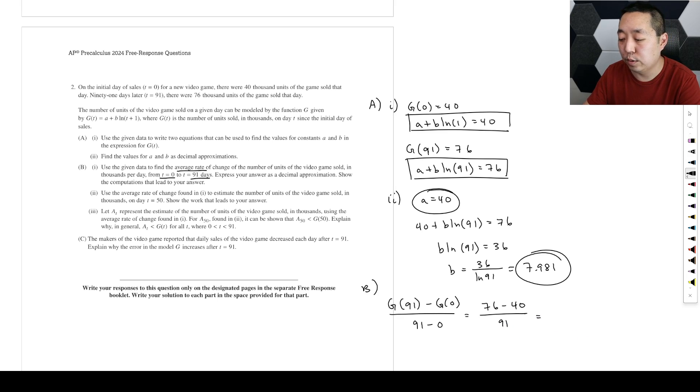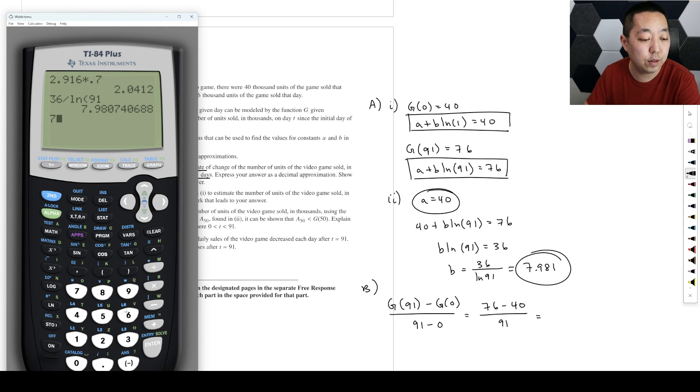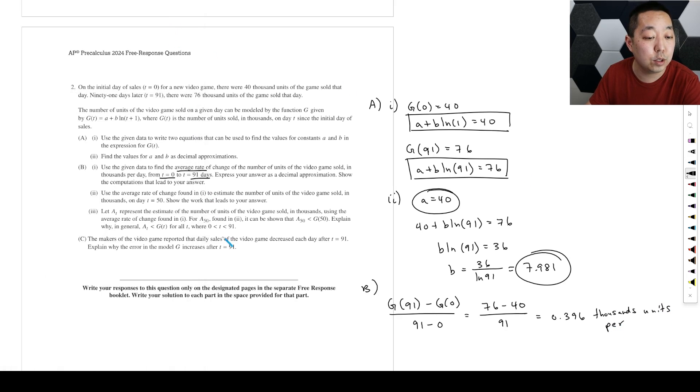And then when you put your units here, so be careful when you do this one. So we're going to do 76 minus 40. And then divide that. That's 36 divided by that 91 there. And you're going to get 0.396 thousands of units. And then per, what is the per unit time? These were in days per day. So that's the rate.